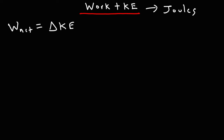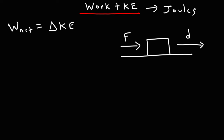Now let's go ahead and derive this formula. Let's say we have a block resting on a horizontal frictionless surface, and we are going to apply a force. There's only going to be one force in the x direction, so that force will be the same as the net force. We're going to move this block by some displacement D. The work done by that force is going to be equal to the force times the displacement of the object. Because this is the only force acting on the object in the x direction, W is going to represent the net work done on the object by that net force.